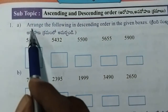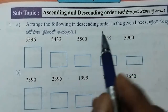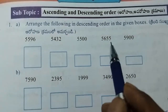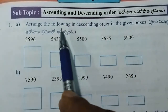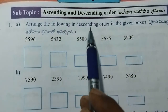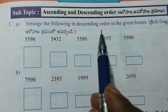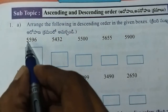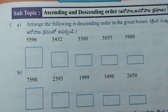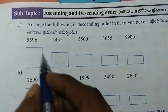Let's arrange the following numbers in descending order. Descending order means big to small. Let's see the 1000s place and choose the first big number.